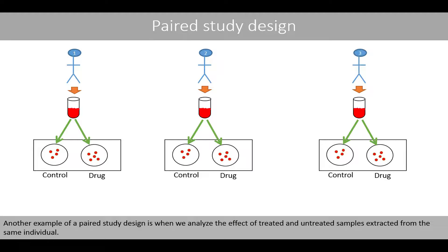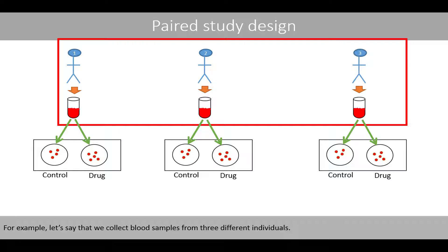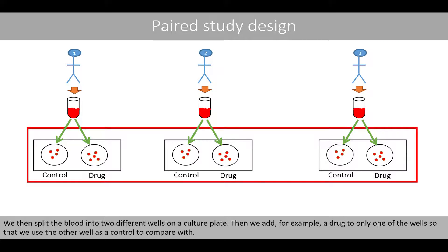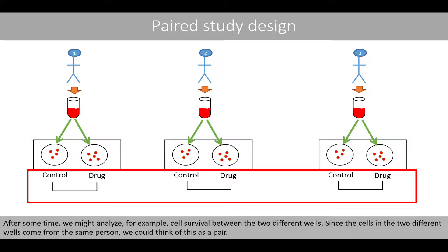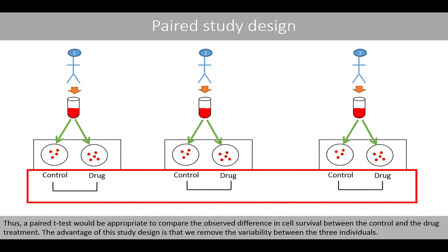Another example of a paired study design is when we analyze the effect of treated and untreated samples extracted from the same individual. For example, let's say we collect blood samples from three different individuals. We then split the blood into two different wells on a culture plate. Then we add a drug to only one of the wells, using the other well as a control. After some time, we might analyze cell survival between the two different wells. Since the cells in the two wells come from the same person, we could think of this as a pair. Thus, a paired t-test is appropriate to compare the observed difference in cell survival between a control and a drug treatment. The advantage of this study design is that we remove the variability between the three individuals.